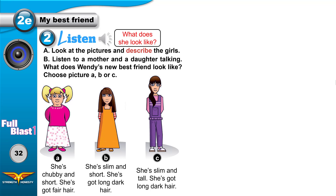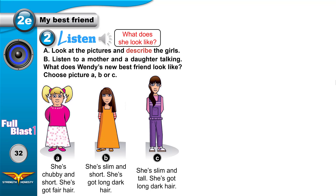Hey Mom, can I go to Brooke's house on Saturday? Who's Brooke, Mom? Brooke is my new best friend! Yes, she's also in my class. What does she look like? Has she got long fair hair? No, she's got long dark hair. Oh, is she tall? No, she isn't — she's short. Oh, I remember her — she's chubby, right? No, she's slim and very beautiful. Ah, now I remember her! So can I go to her house and play? Hmm, go and ask your father, Mom.